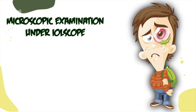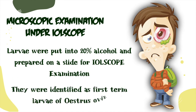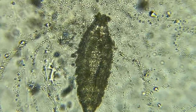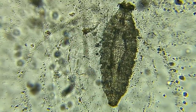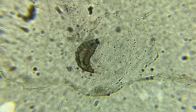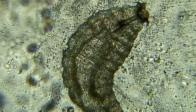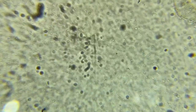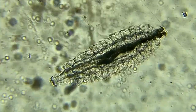Microscopic examination under IOLscope: larvae were put into 20% alcohol and prepared on a slide for IOLscope examination. They were identified as first instar larvae of Oestrus ovis, which causes ophthalmomyasis externa. The larvae are identified by oral hooks attached to the internal cephalopharyngeal skeleton. Segments with intersegmental spine bands can be seen, and the presence of spicules confirms the diagnosis of Oestrus ovis.